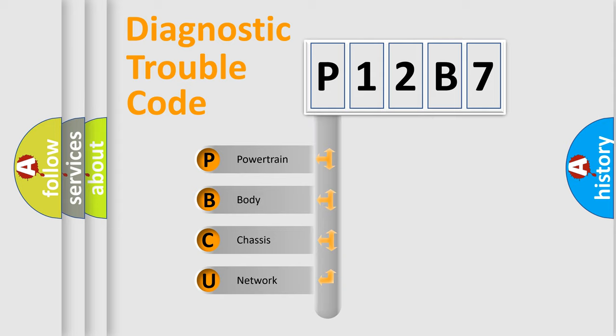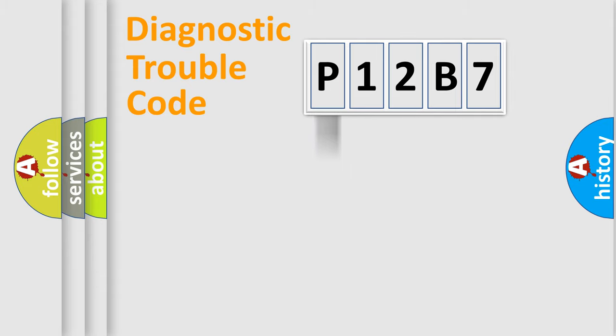We divide the electric system of automobile into four basic units: Powertrain, Body, Chassis, and Network. This distribution is defined in the first character code.